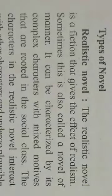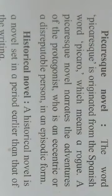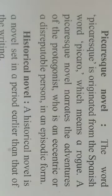The first type is the realistic novel, which depends on reality and depicts real things. The second type is the picaresque novel, which narrates the adventures of the protagonist. The third type is the historical novel, which shows history and is set in a period earlier than that of the writing.